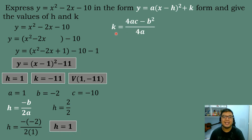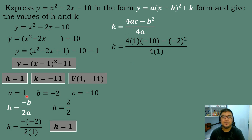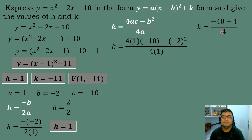Then we use the formula for k: k = (4ac − b²) / 4a. Substituting the values: 4 × 1 × (−10) − (−2)² all over 4 × 1. Simplifying: 4 times 1 times −10 is −40; (−2)² is positive 4; so we have −40 − 4 over 4. Negative 40 plus negative 4 equals −44. Divided by 4, k = −11.